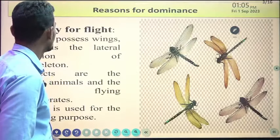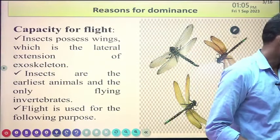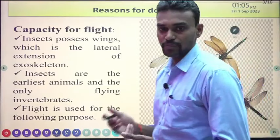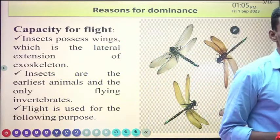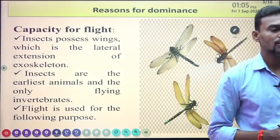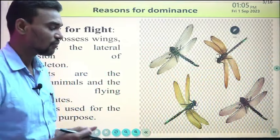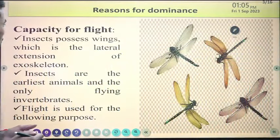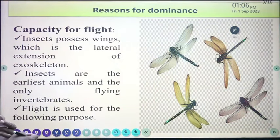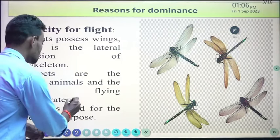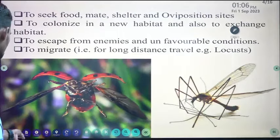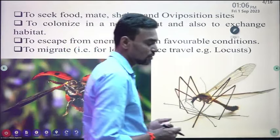The first point is the capacity for flight, which is a major reason insects are dominant. Insects have wings, due to which they can locomote and shift from one place to another for various purposes related to their livelihood, getting food, mating, and so on. Insects are the earliest and only flying invertebrates — among invertebrates, only insects have wings, so they can fly.